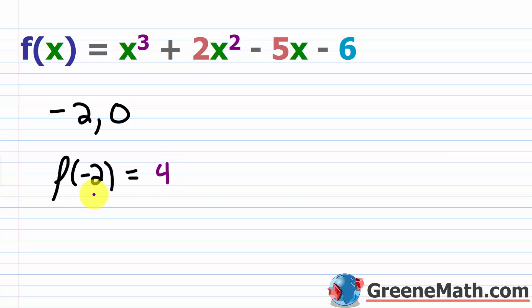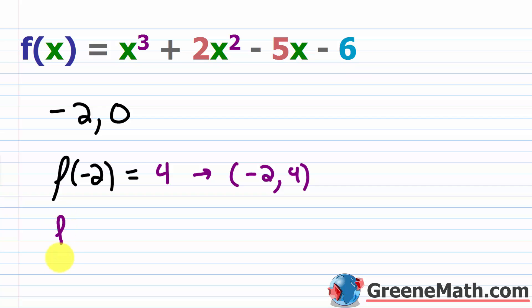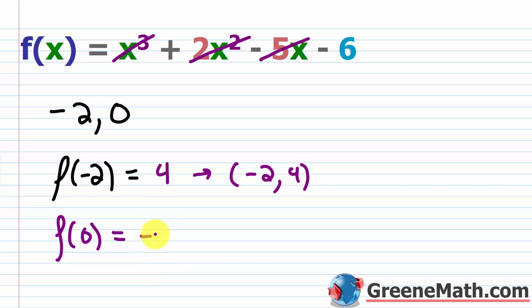So the function's value when x is negative 2 is 4. We can write this as an ordered pair: negative 2 comma 4 is on the graph of this function. We also want to look at f of 0. If I plug in 0, everything goes to zero except the constant, so I'm left with negative 6. On the graph of this function would be 0 comma negative 6.